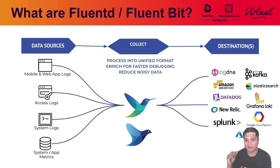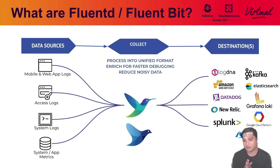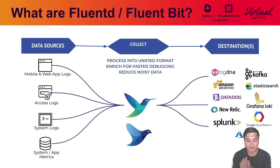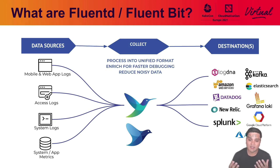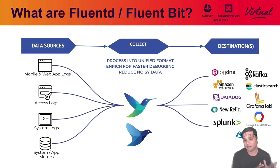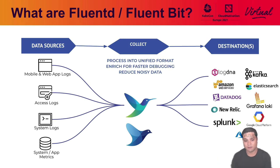You might have things like Amazon S3, Splunk, Elasticsearch, Loki, Azure, GCP, Kafka, and those destinations just continue to evolve and expand. You might need to send data to multiple, you might need to send data to all of them, or just a single one. In any case, Fluentd and Fluentbit are really vendor-neutral solutions — collect data once and send it to as many destinations as you require.